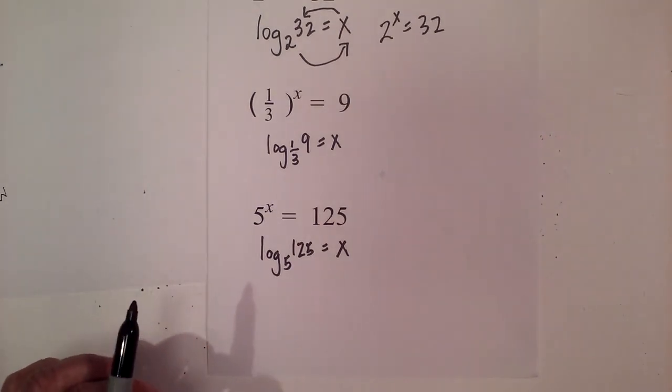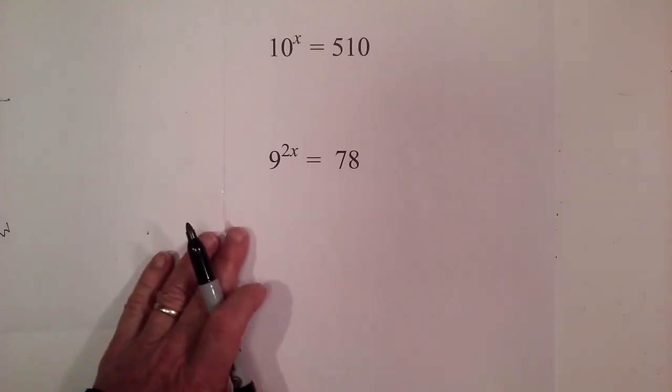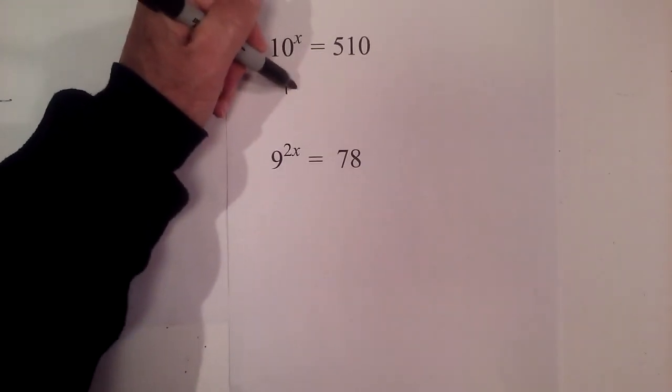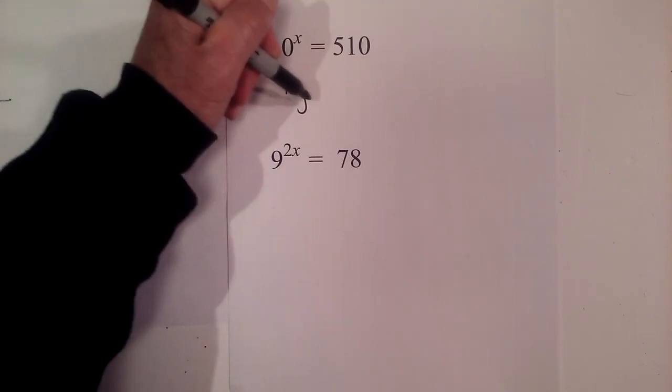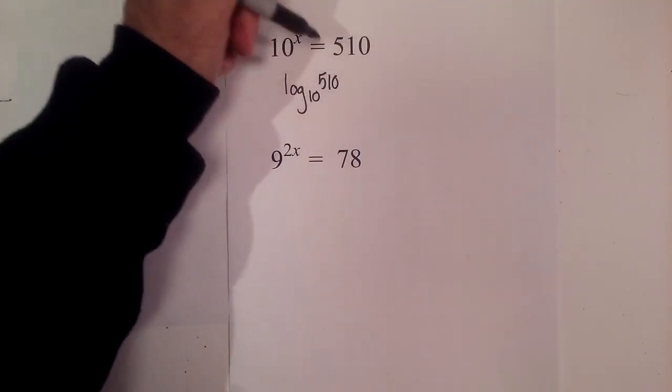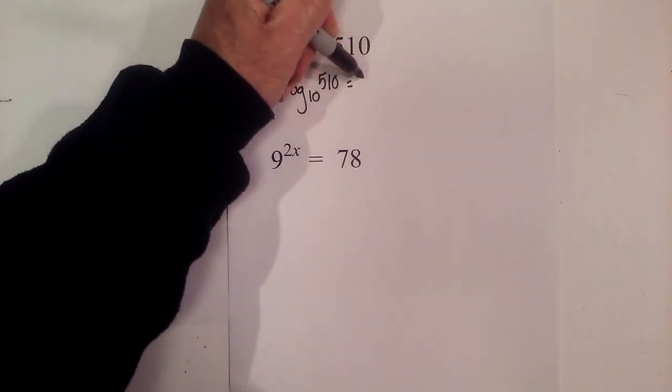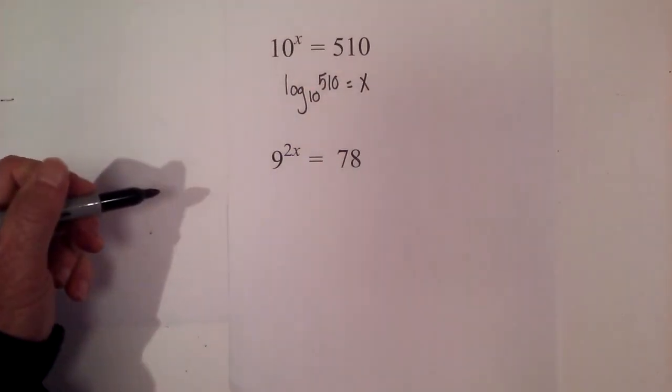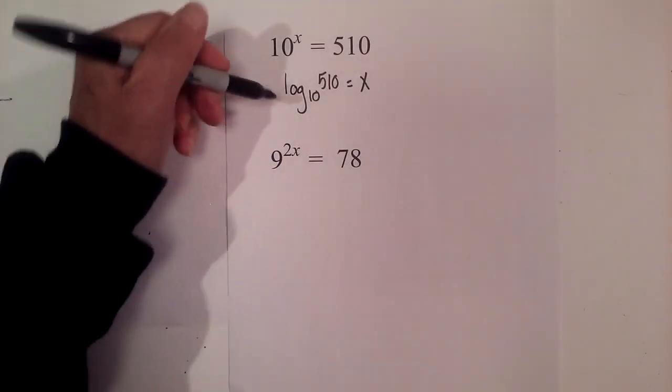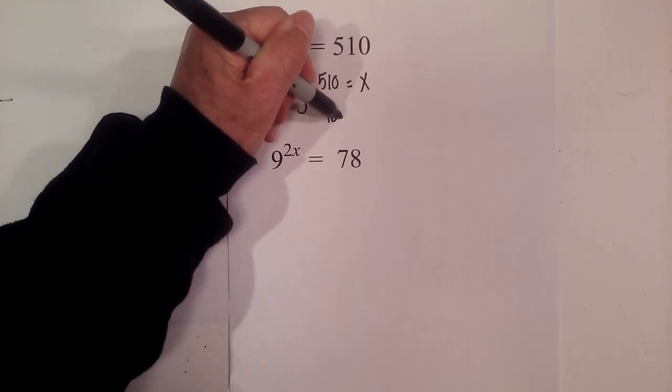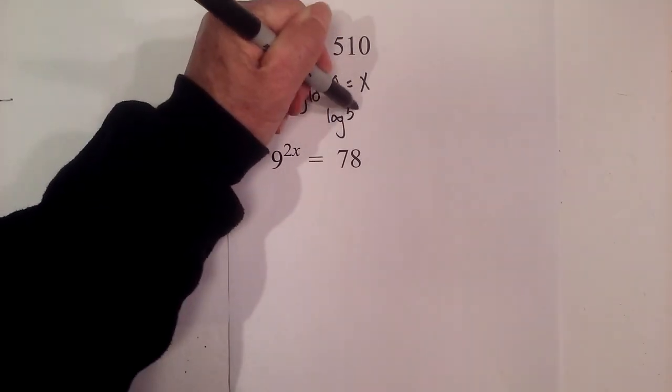Let's try two more. Now we have 10^x = 510, so log base 10 of 510 equals the exponent. Remember it's always equal to the exponent. Now with base 10, you could actually rewrite this. If you do not have a base, it's always assumed that it's 10. You could write this: log 510 = x.